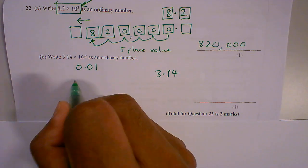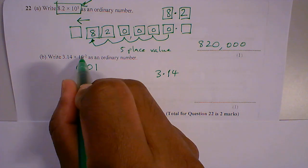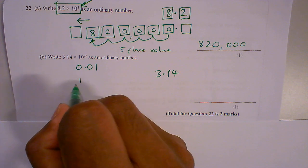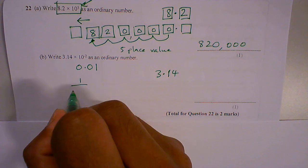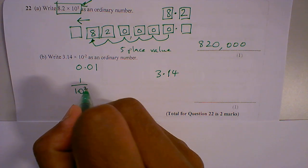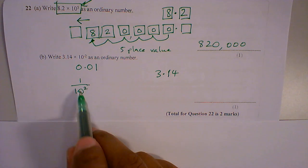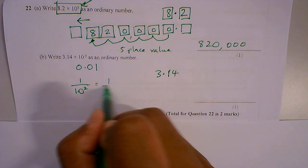How did I get that? The reciprocal of this - 10 to the power minus 2 is the same as 1 over 10 squared. 1 over 10 squared is 1 over 100.